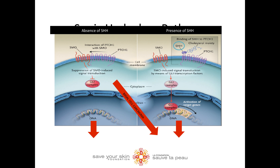When cells need to divide, the Sonic Hedgehog protein will bind to a receptor called PTCH1, which allows PTCH1 to release another protein inside the cell called SMO. SMO will then promote other signaling molecules that will tell the cells that they need to start dividing. In BCC, this pathway does not work properly, so the cells will continue to divide without regulation and a tumor arises. Individuals who develop mutations in this pathway when exposed to UV radiation from sun or tanning beds will develop BCC.